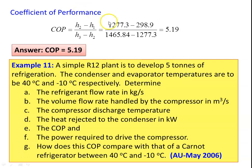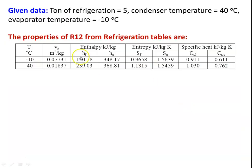We take Example 11. A simple R12 plant is to develop 5 tons of refrigeration. The condenser and evaporator temperatures are 40°C and minus 10°C respectively. Determine: refrigerant flow rate in kg/s, volume flow rate handled by the compressor in m³/s, compressor discharge temperature, heat rejected to the condenser in kW, COP, and power required to drive the compressor. How does the COP compare with the Carnot refrigerator between 40°C and minus 10°C? This is from the university question paper May 2006. The properties are not given, so we take R12 properties from the refrigeration table.